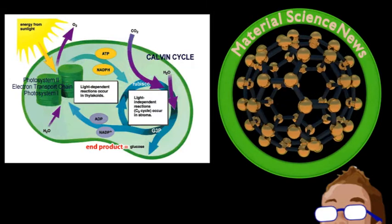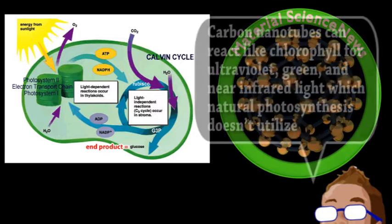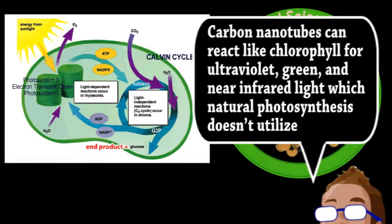Natural photosynthesis only uses about 10% of incoming light, and carbon nanotubes react similar to chlorophyll for a wide spectrum of photons. Adding both nanomaterials to the chloroplasts increased electron flow within them by around 50%, and made them last hours longer.